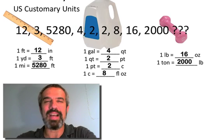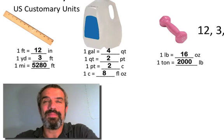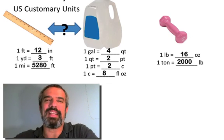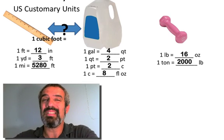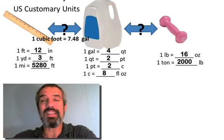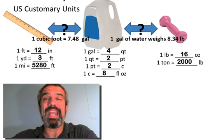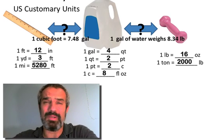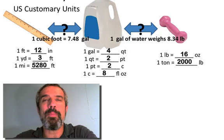Look at these numbers: twelve, three, five thousand two hundred eighty, four, two, two, eight, sixteen, two thousand. What's the connection, what's the pattern, what's the system? There isn't one. And there's no connection between units either — a cubic foot is about 7.48 gallons, and a gallon of water weighs about 8.34 pounds. Not easy numbers to deal with.